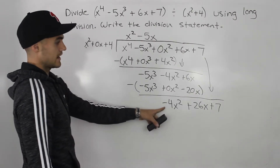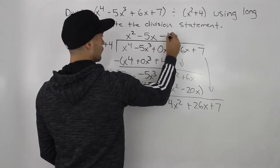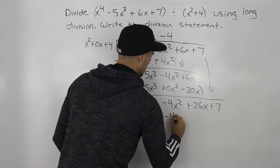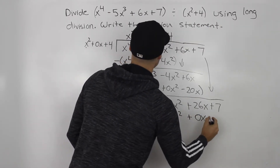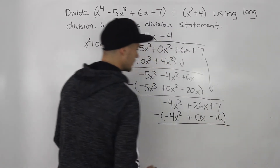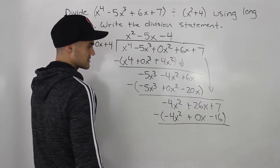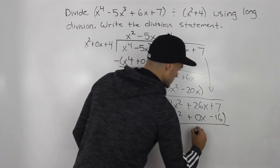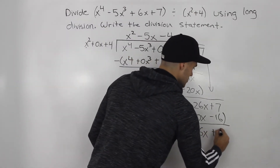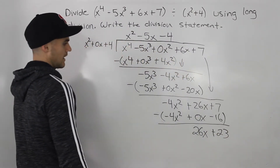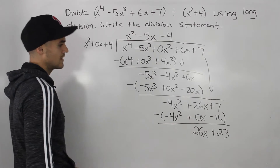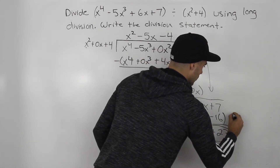And let's bring this 7 down. How many times does x squared go into negative 4x squared? Negative 4 times. Negative 4 multiplied by all the terms in the divisor gives us negative 4x squared, 0x, minus 16. Subtracting everything, the negative 4x squared terms net out to 0. 26x minus 0x gives us 26x. And 7 minus negative 16 is the same as 7 plus 16, which is plus 23. We are done, because x squared can't go into 26x — this is a lower degree than the divisor. So 26x plus 23 is our remainder.